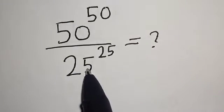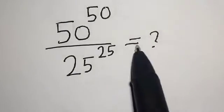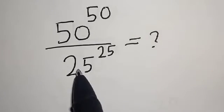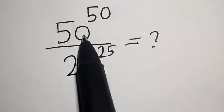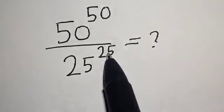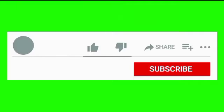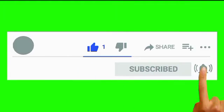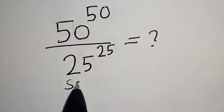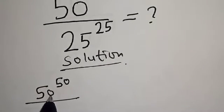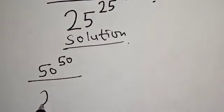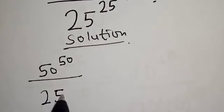50 raised to power 50 divided by 25 raised to power 25 is equal to what? Hi everyone, welcome to my class. In this class we want to look at how we can quickly solve this power division problem: 50 raised to power 50 over 25 raised to power 25. Solution: we have 50 raised to power 50 over 25 raised to power 25.